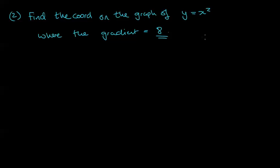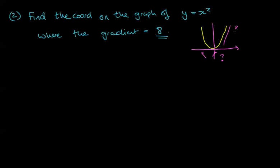We know y = x² looks like a parabola, and somewhere on it the gradient is going to be 8 steep — but where exactly? This time they've told us the gradient and they want us to find the coordinate. We're working backwards.